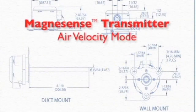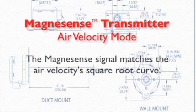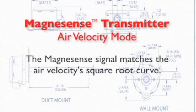One great feature of the Magnesense transmitter is its ability to be switched via a jumper into an air velocity mode unit. In this mode, the Magnesense transmitter will produce a signal that will actually match the air velocity's square root curve itself, thus not requiring any additional programming at another device.